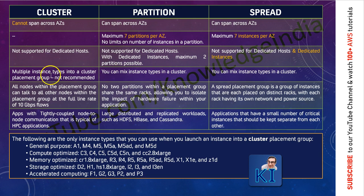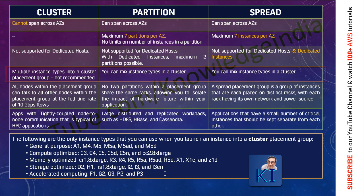One last point: what are the instance types which you can launch in the different types of placement group? In the cluster one, you can go ahead and mix instance types but it is not recommended, because Amazon will try to launch these instances together and possibly place them on the same physical host — so it would be good if they are of the same EC2 instance type. Also, not all EC2 instance types are supported for the cluster placement group; some older generation instances are not supported. When it comes to partition and spread, you can very well mix EC2 instance types — multiple types of EC2 instances are possible.